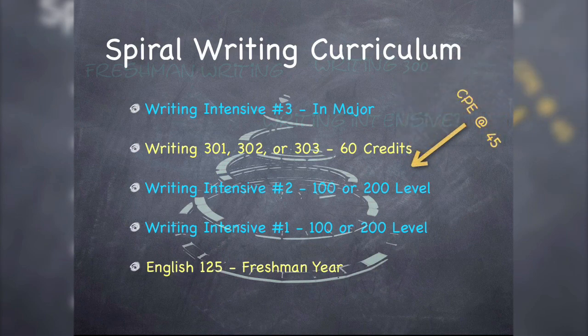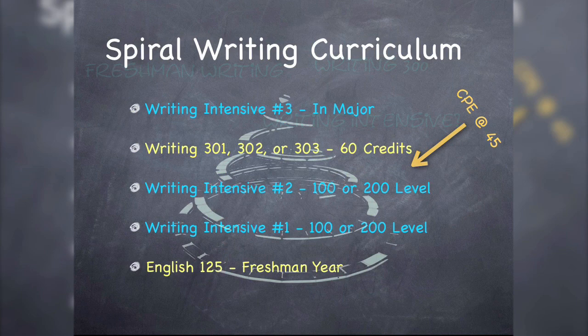One of the things about the spiral writing curriculum at York College is that people on campus might not really recognize this, but this is quite a robust set of writing requirements. Three writing-intensive courses — two at the lower level that follow up and reinforce freshman writing — and then a composition course at the junior level to solidify that lower-level work, and then to extend that through research toward the writing in the disciplines course. This is quite a robust set of requirements, really.